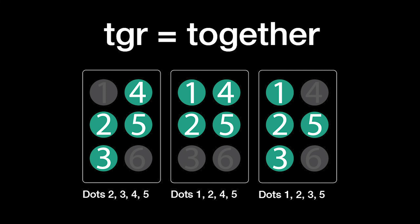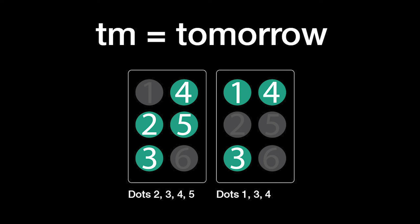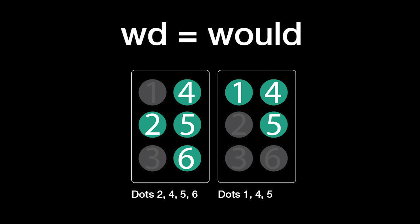Together is T-G-R: dots 2, 3, 4, and 5, plus dots 1, 2, 4, and 5, plus dots 1, 2, 3, and 5. Tomorrow is T-M: dots 2, 3, 4, and 5, plus dots 1, 3, and 4. Tonight is T-N: dots 2, 3, 4, and 5, plus dots 1, 2, 4, and 6. Would, as in I would do something, is W-D: dots 2, 4, 5, and 6, plus dots 1, 4, and 5.